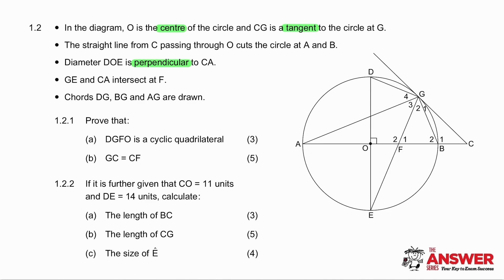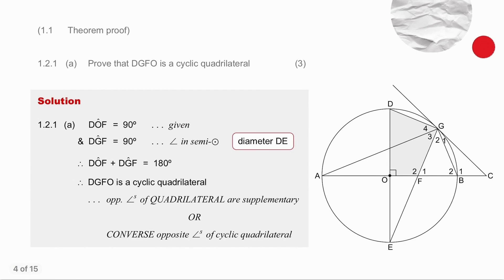I want you to pause the video, try this yourself, and then we will do it together. The first question asks you to prove that DGFO is a cyclic quadrilateral. Remember there are three ways to prove that a quadrilateral is cyclic: you can prove that the opposite angles are supplementary, or you can prove that an exterior angle is equal to an interior opposite angle, or you can work with angles in the same segment.